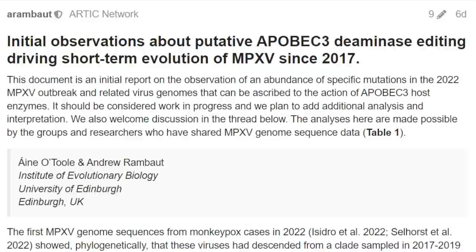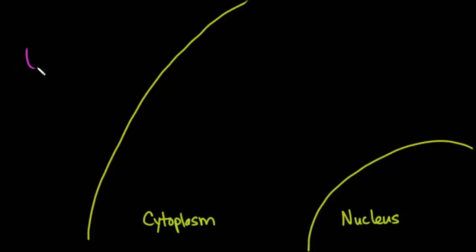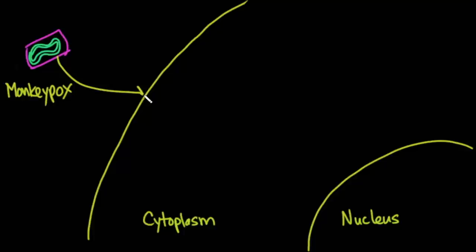Before we get into this article, we need to bring everybody up to speed on exactly how this virus replicates in the human body, and what is this APOBEC3 that the body uses to attack viruses. Here is the cell, with the nucleus and the cytoplasm. Inside the viral particle is a double-stranded DNA. As opposed to coronavirus, which is RNA, monkeypox is a double-stranded DNA virus. The DNA is actually replicated in the cytoplasm of the cell, not the nucleus.